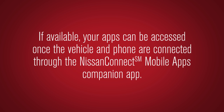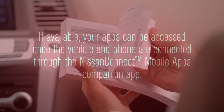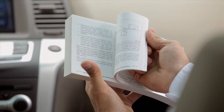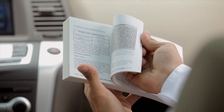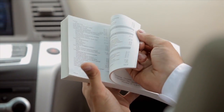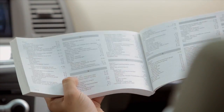If available, your apps can be accessed once the vehicle and the phone are connected through the Nissan Connect mobile apps companion app. Please see your owner's manual for important safety information, system limitations, and additional operating information.